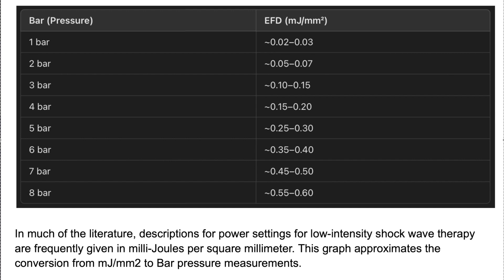These two actually measure different aspects of the shockwave. Bar pressure is kind of like, if you imagine a pond, the size of the stone you throw tells how strong the impact is when the stone hits the water. Energy flux density is measuring how much energy spreads out from the splash across the ripples.